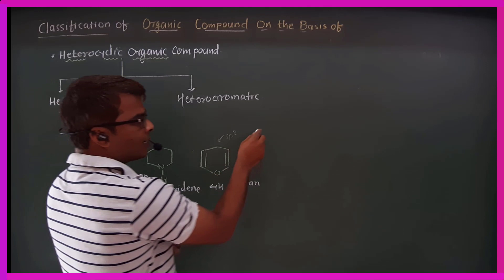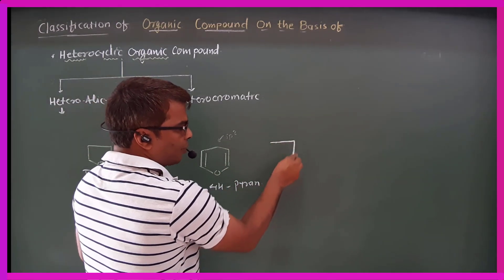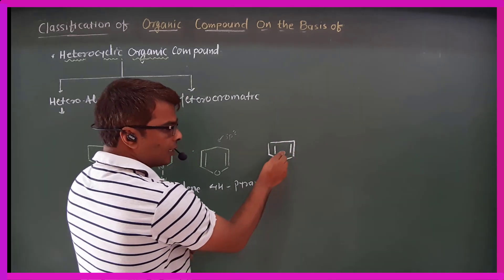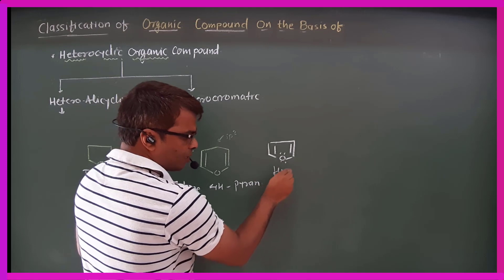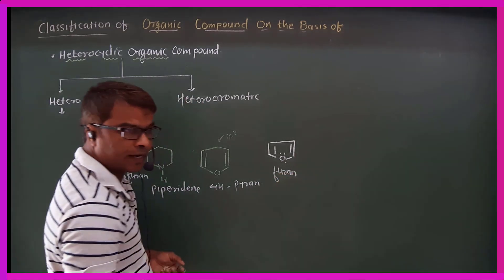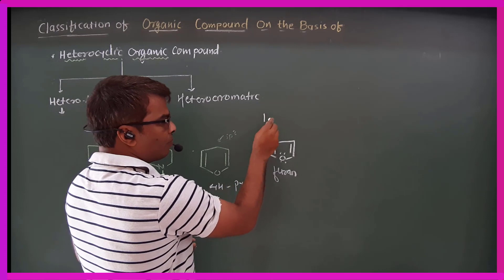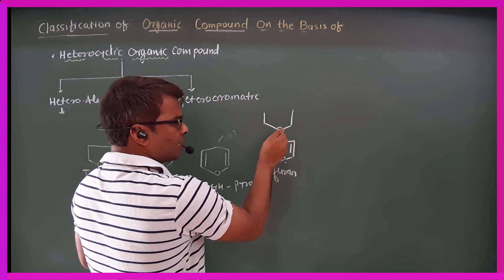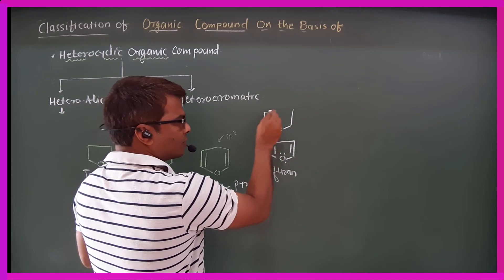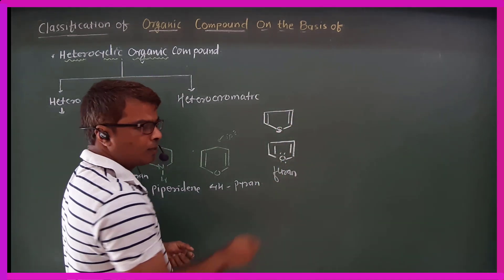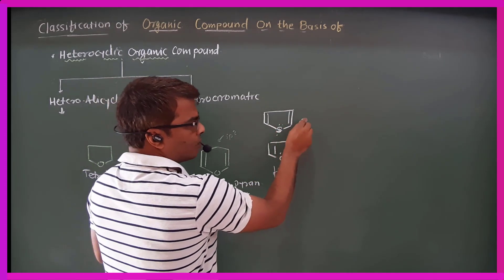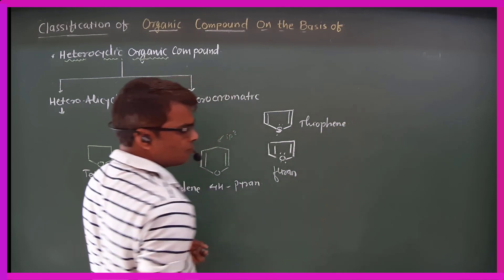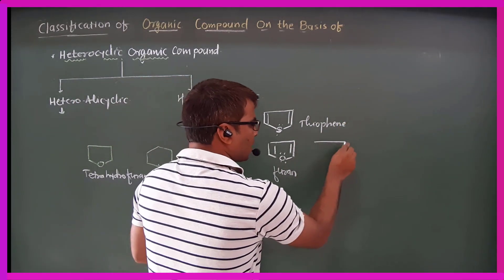A 5-membered ring compound can be extended with another 5-membered ring. The compound furan is a 5-membered aromatic heterocyclic ring. A sulfur-containing 5-membered ring compound is called a sulfur heterocyclic compound. The next compound is a 5-membered nitrogen-containing heterocyclic compound.